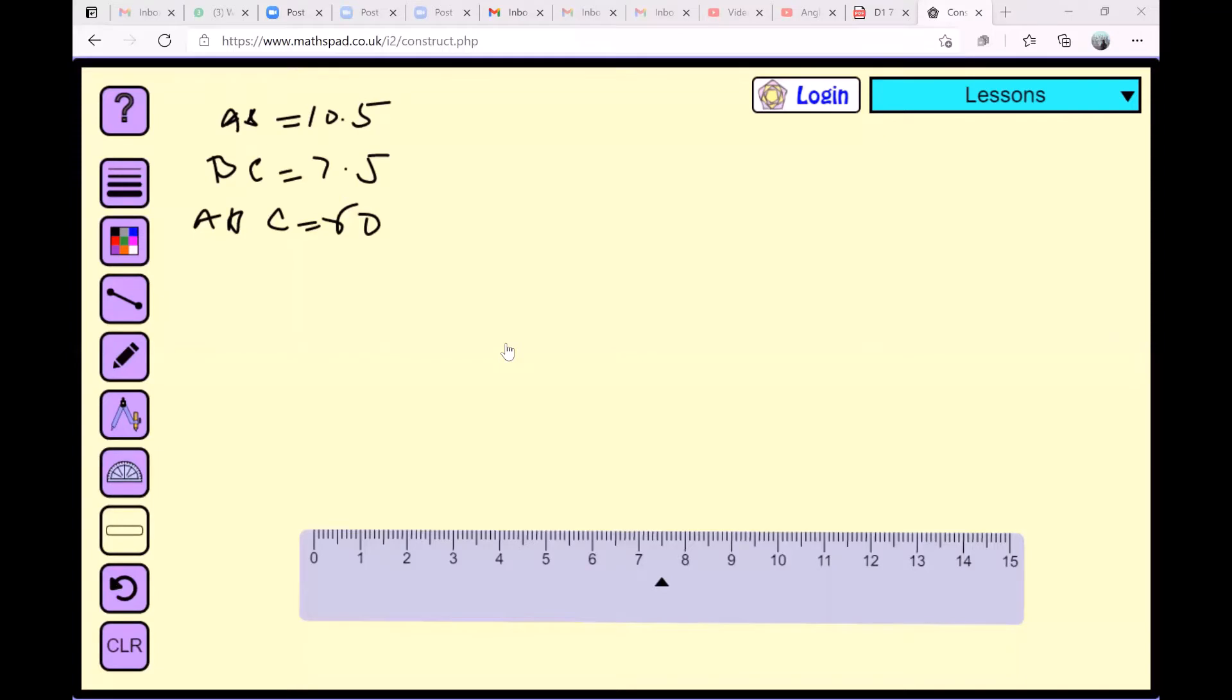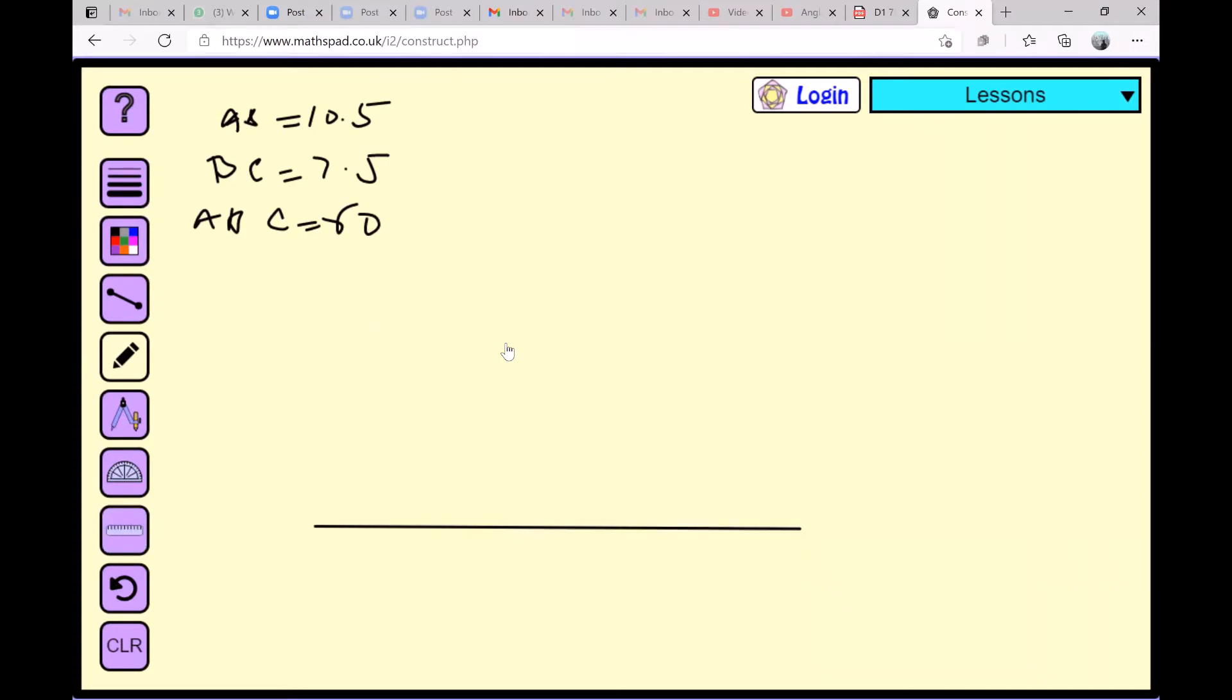Let's draw a line segment of length AB which is 10.5, so I'll draw it here. This is exactly 10.5. Now I will be drawing an angle of 60 degrees.